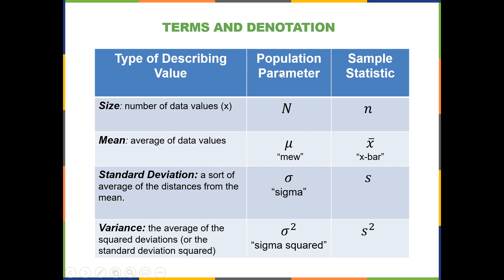The symbols that we use will depend on whether we're talking about a measurement from the population, every single member in the population considered a parameter, or if it's from a sample, then it would be considered a statistic. The population size is a population parameter denoted by the capital letter N, while the sample size uses the lowercase letter n.